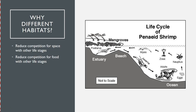Again, it's important to recognize why they are in different habitats at different life stages. The two overarching reasons are that it reduces competition for both space and food with other life stages.